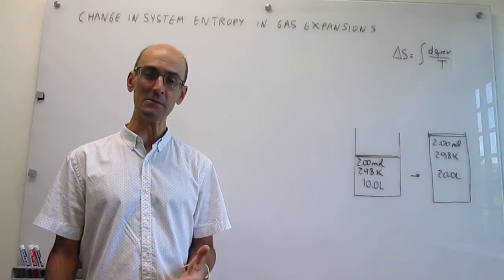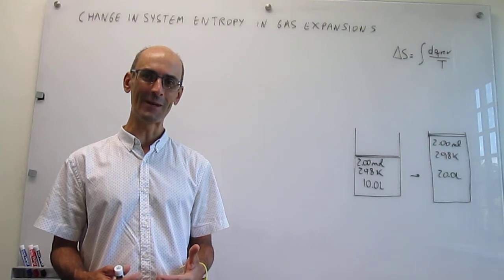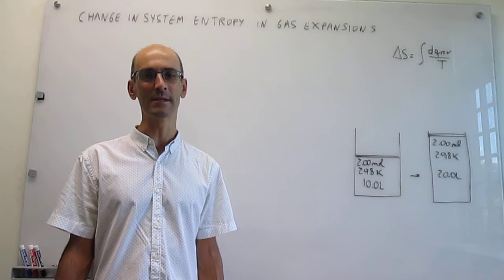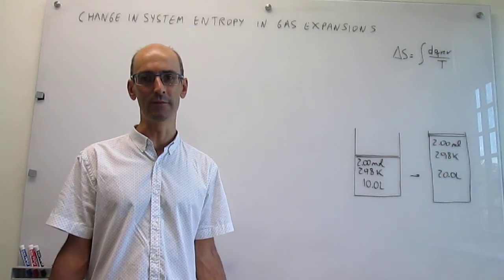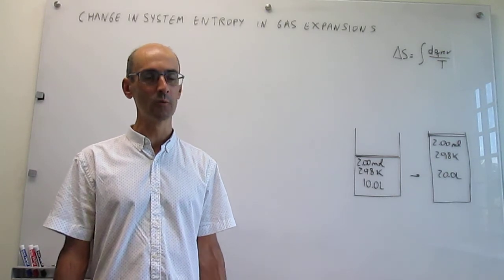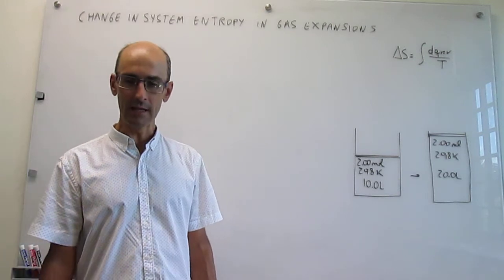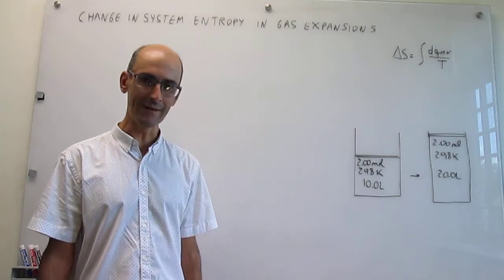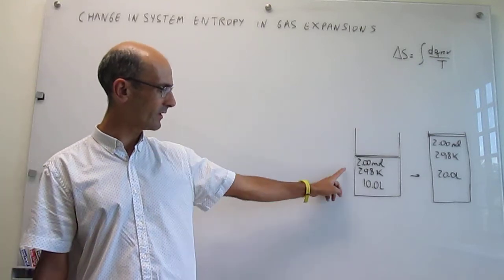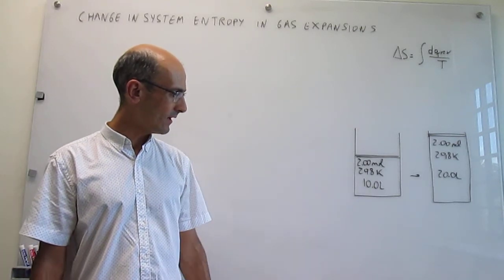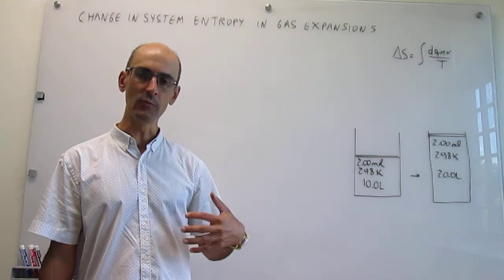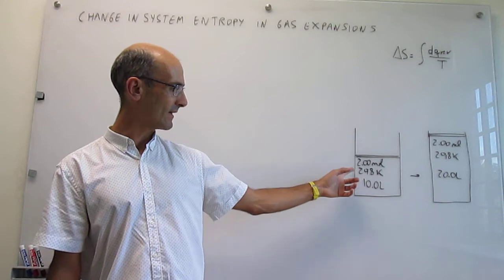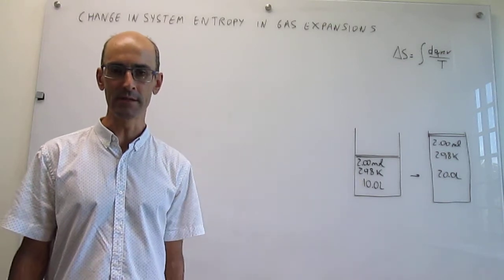After that introduction, this is a good time to start working and applying problems with entropy. The first simple example is a gas expansion like the ones used in the first law. We have two moles of an ideal gas at 298 Kelvin occupying a volume of 10 liters, and then we let this expand until the volume doubles. Notice that the expansion is isothermal, so the temperature is constant.